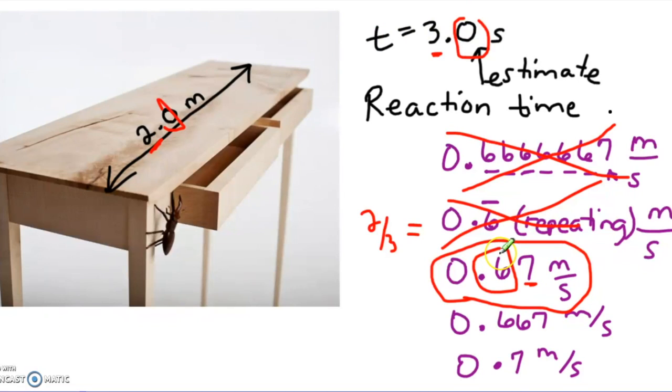And so the 7 is an uncertain digit. In this answer, the 6 was measured. It's the 2 and the 3 up here. And the 7 was your estimated digit. And so this is the most correct answer using significant figures.